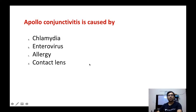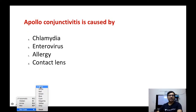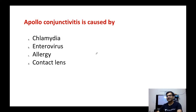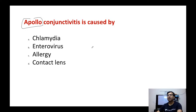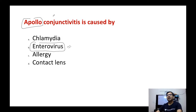Next question: Apollo conjunctivitis is caused by which organism — Chlamydia, enterovirus, allergy, or contact lens? Apollo conjunctivitis is caused by enterovirus. It is named after the Apollo launch vehicle — when the first moon mission launched in the USA, a conjunctivitis outbreak occurred in some areas caused by enterovirus. It is also called hemorrhagic conjunctivitis.